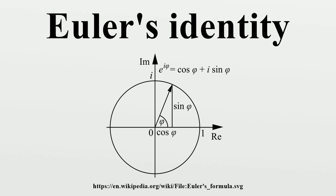A poll of readers conducted by the Mathematical Intelligencer in 1990 named Euler's identity as the most beautiful theorem in mathematics. In another poll of readers conducted by Physics World in 2004, Euler's identity tied with Maxwell's equations as the greatest equation ever.